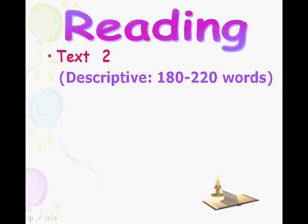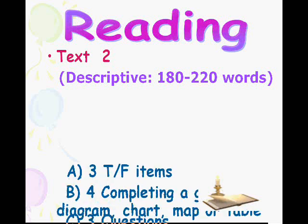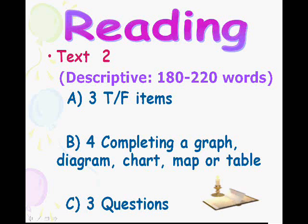You have three MCQ questions. Then we have two completing statements where you have two sentences and you have to find a word or complete the missing word by finding information in the text. We also have two true or false items. Text two is descriptive, around 180 to 220 words. We talked about text two in our second lesson. We have three true or false items, and four completing spaces in a graph, diagram, chart, map, or table.